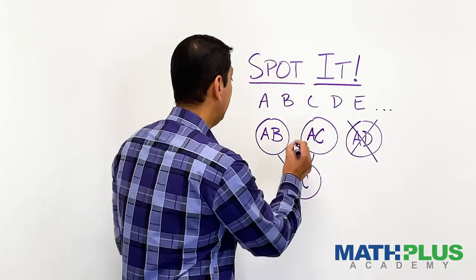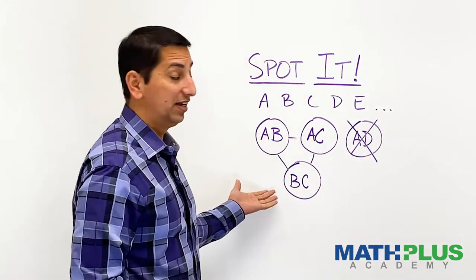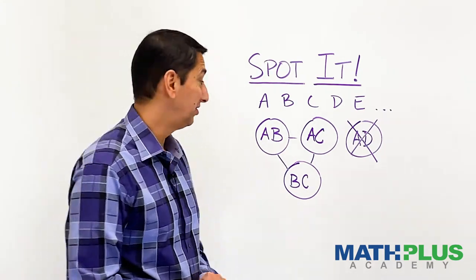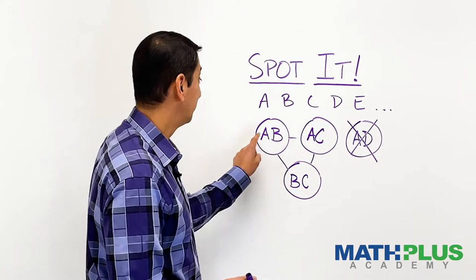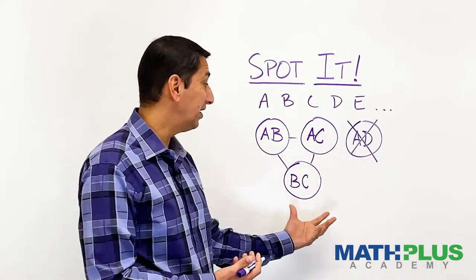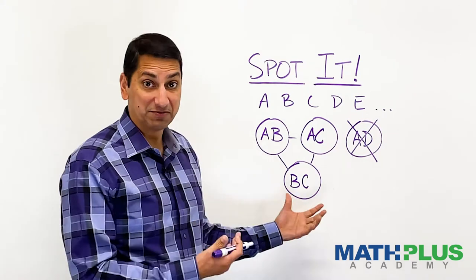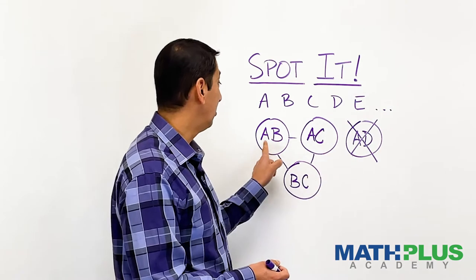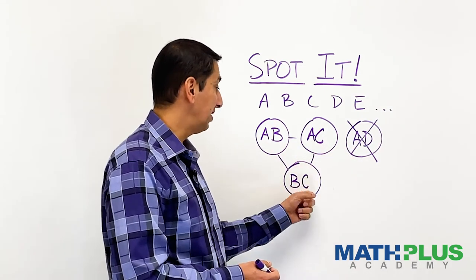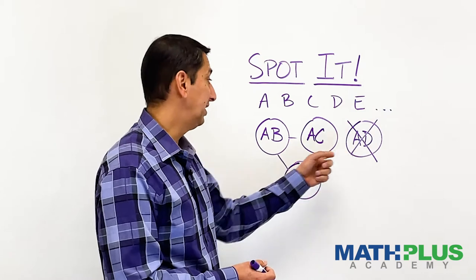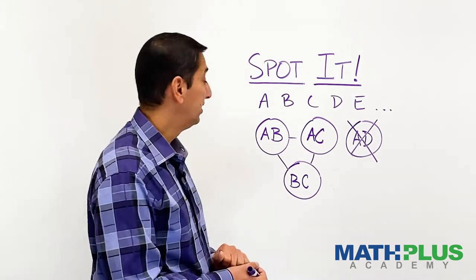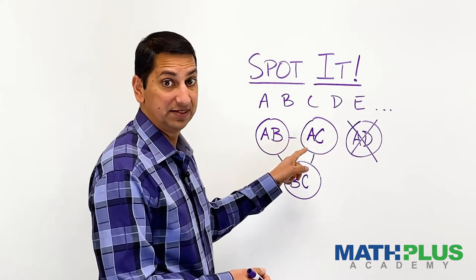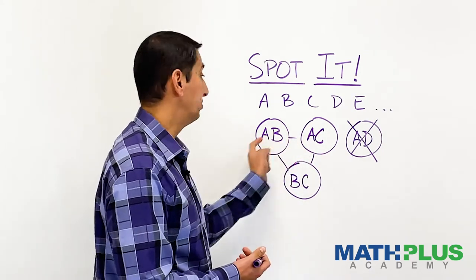And so I think we have a complete Spot It deck when you put two symbols on every card. You get a three-card deck that looks like this. Now this would be a pretty boring game of Spot It. But at least we've created the deck. And you'll notice that I wasn't able to make a third card that had A on it because I wasn't going to be able to put a symbol on here to make it match up. So it seems like, if you notice, that every letter, every symbol, appears twice.